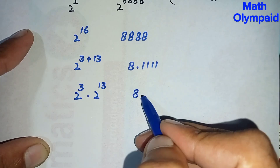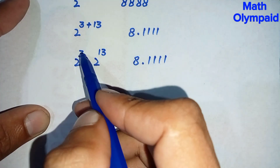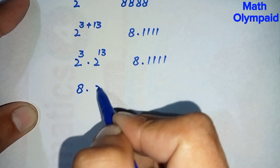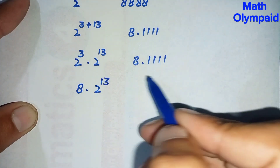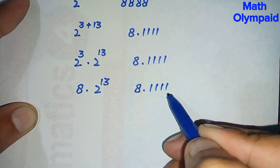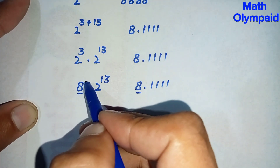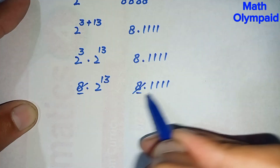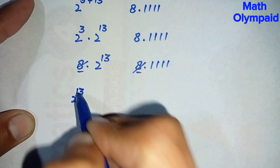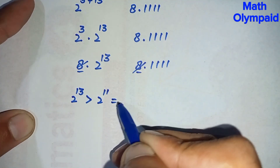We write the right side number as 8 times 111. Since 2 raised to power 3 is 8, we replace it, so the left becomes 8 times 2 raised to power 13, and the right remains 8 times 111. The 8 on both sides is the same, so we cancel it. Now we compare just 2 raised to power 13 versus 111.